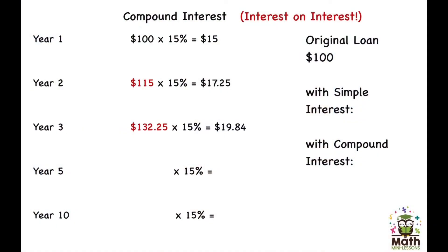Get your calculators ready — we're going to figure out how to find compound interest. There is a formula, which I'll cover in a future video, but I want to break down the steps so you can see where the compounding really happens. We'll start with no interest yet: find 15% of the principal, $100. On your calculator: 100 × 0.15 = $15.